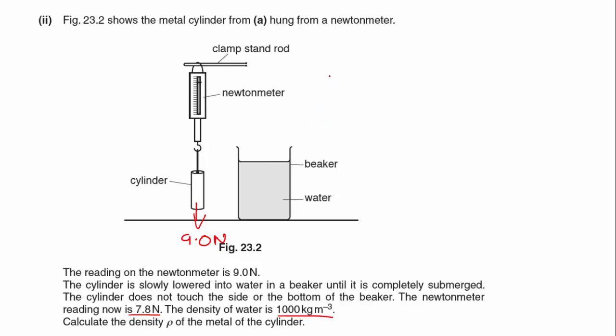What we know is the upthrust. Let's draw a force diagram. Here's my cylinder. I've got a weight of 9 Newtons pulling it down. If the Newton meter now only reads 7.8 Newtons, it's still in equilibrium, so I must have a second upward force which is the upthrust. That upthrust equals 9 minus 7.8, which is 1.2 Newtons. From Archimedes' principle, we know the upthrust equals the weight of the fluid displaced.